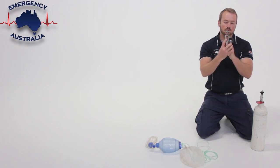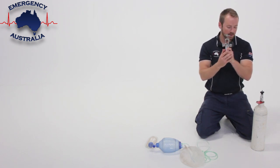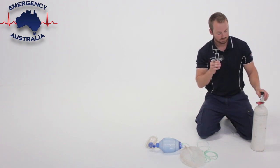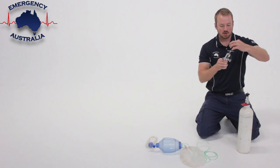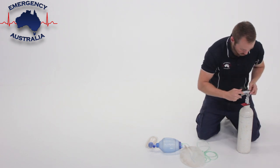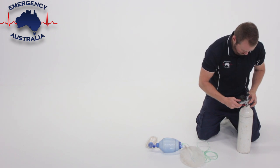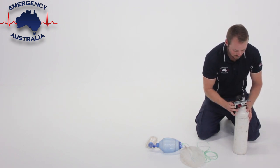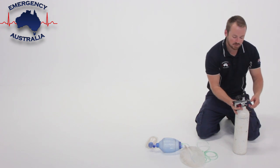We've got two prongs here on the O2 regulator. They need to align with the two holes on the oxygen cylinder. Make sure it's all the way unscrewed, place it over the top of the cylinder, put the two prongs in the holes, keep it level at 90 degrees, and tighten the regulator.